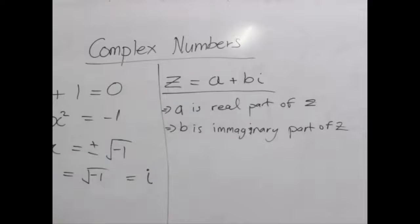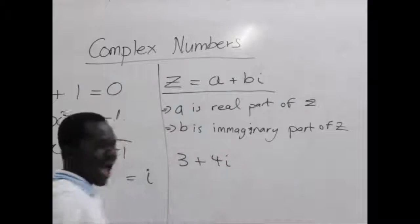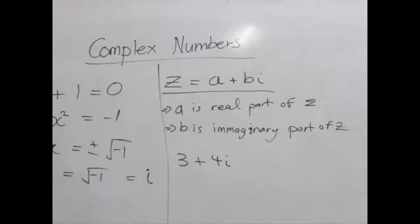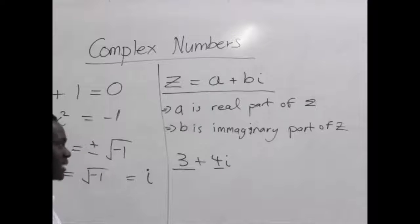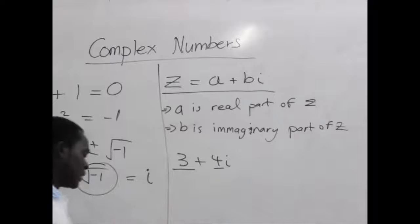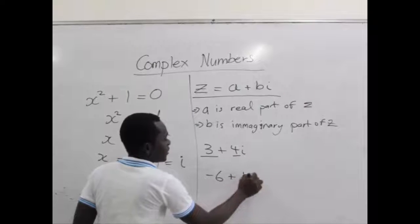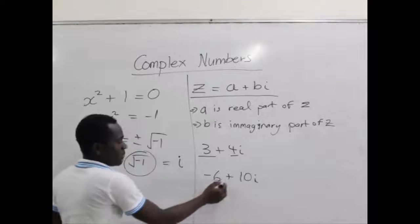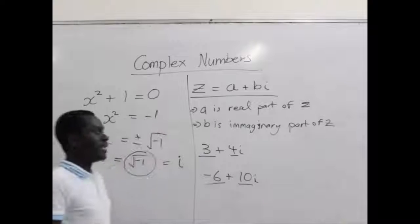Let's look at examples of complex numbers. We can have 3 plus 4i — 3 is the real part, and 4 is the imaginary part. Don't forget, the value of i is the square root of negative 1. Another example is negative 6 plus 10i — negative 6 is the real part, and 10 is the imaginary part.